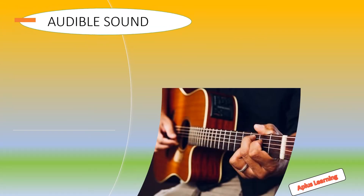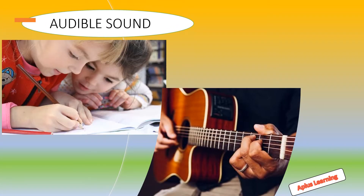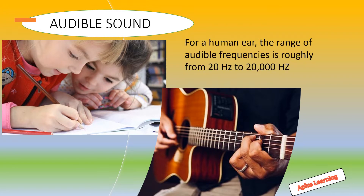Children, now let's see what is audible sound. We already know that the range of audible frequencies for a human ear is roughly from 20 hertz to 20,000 hertz. That means a human ear has a limitation — it can hear from 20 hertz to 20,000 hertz. Neither can we hear less than 20 hertz nor above 20,000 hertz.